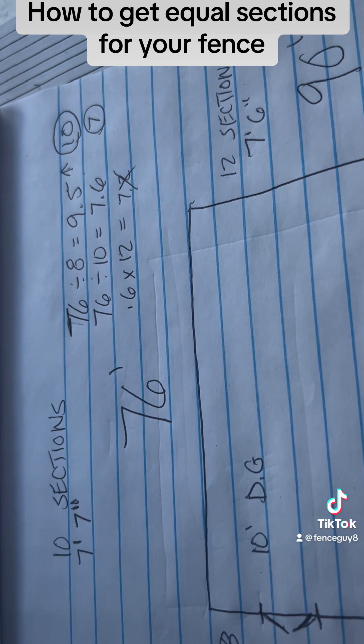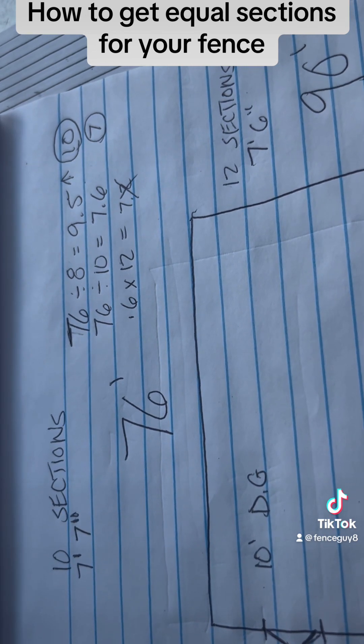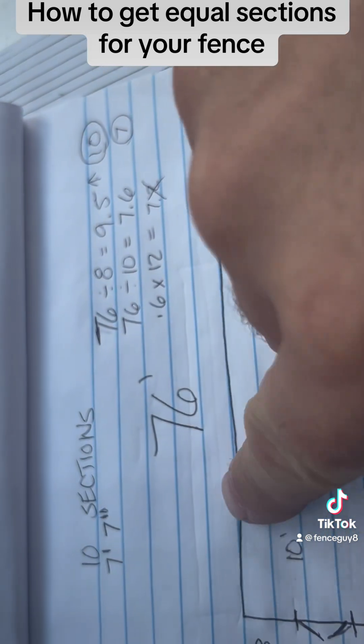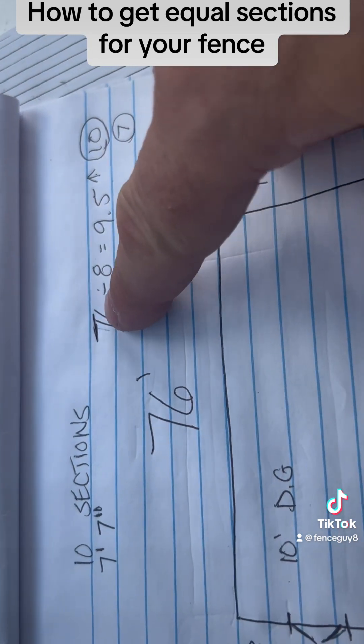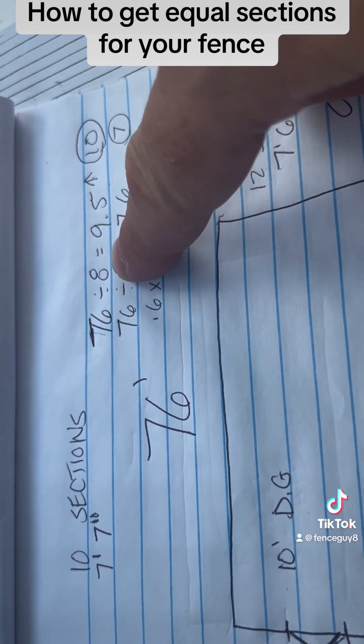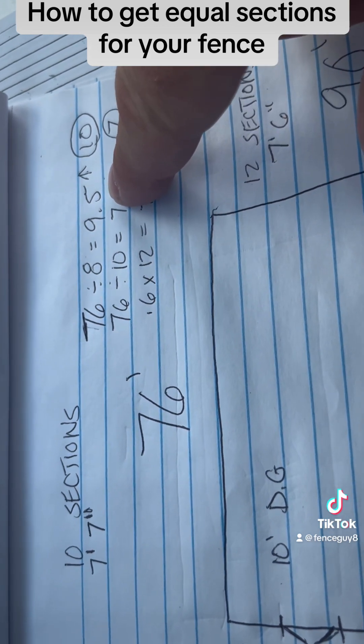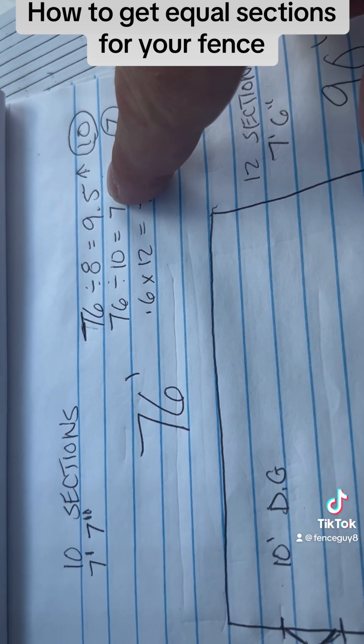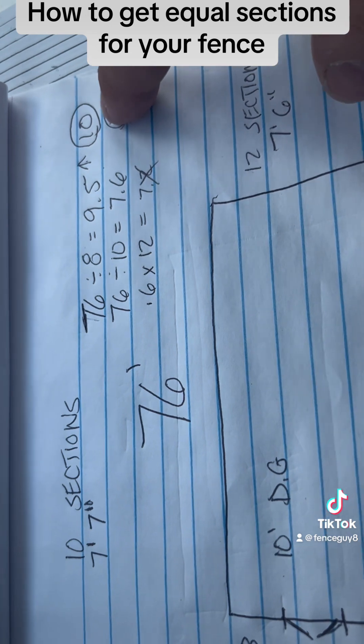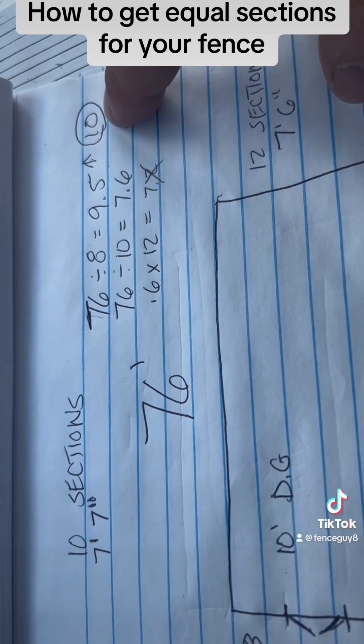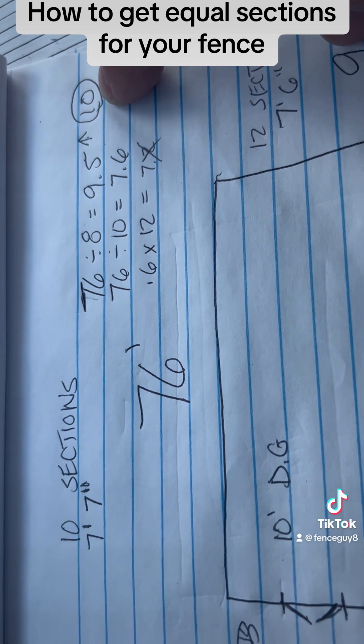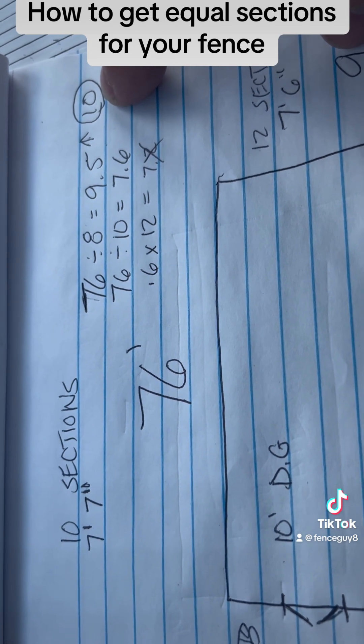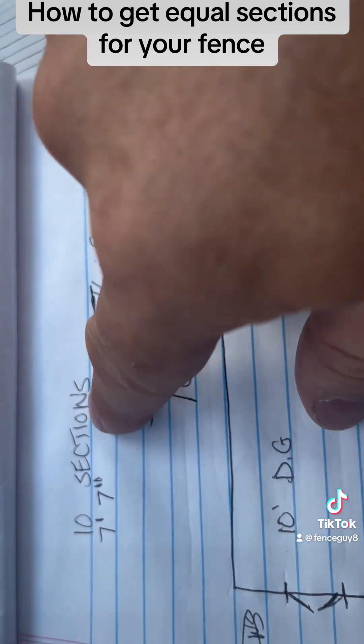Alright, I already did the math, but I'm going to kind of show y'all how I did it and walk y'all through it. So on this back run, it's 76 feet. So we're going to take 76 and divide it by 8. It's going to come out to 9.5. So what you're going to do is you're going to take that number and round it up to the next whole number, so 10. So what that number is, that number is how many sections you're going to have. So I'll put that over there, 10 sections.